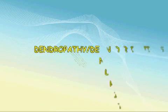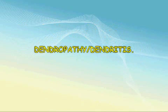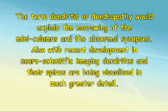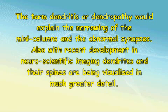Dendropathy or dendritus. Perhaps a simpler description would be a dendritus or dendropathy. The term dendritus or dendropathy would explain the narrowing of the mini-columns and the abnormal synapses. Also, with recent developments in neuroscientific imaging, dendrites and their spines are being visualized in much greater detail. Other conditions associated with autistic behavior, such as Rett's syndrome, Fetal Alcohol Syndrome, and Fragile X syndrome, also have abnormally shaped dendritic spines.